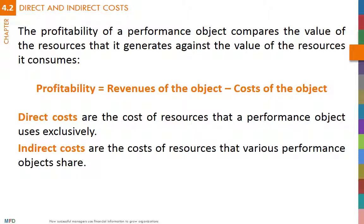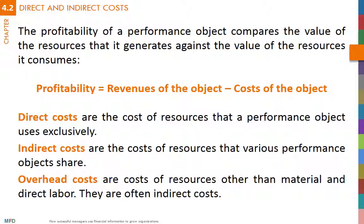Indirect costs are the cost of resources that various performance objects share. For example, the cost of machines used to produce different products is a shared resource. Resources that are not material or direct labor are called overhead costs. Overhead costs are often indirect costs.